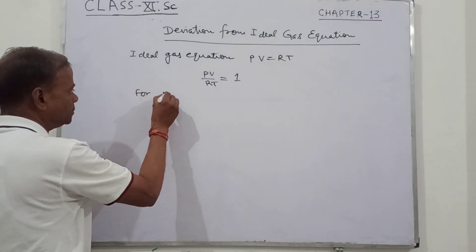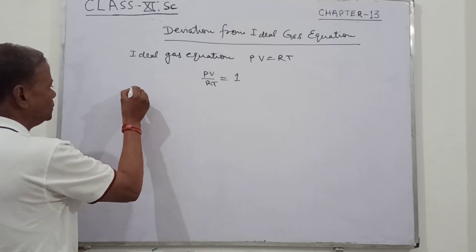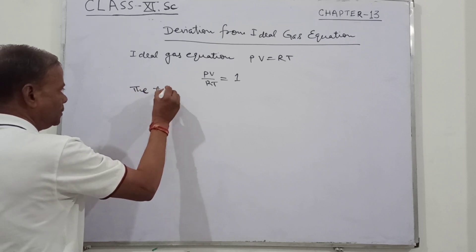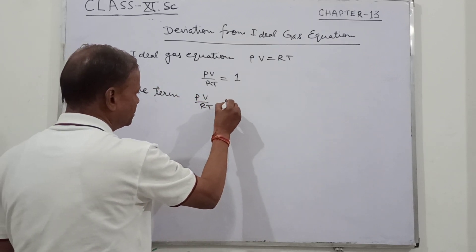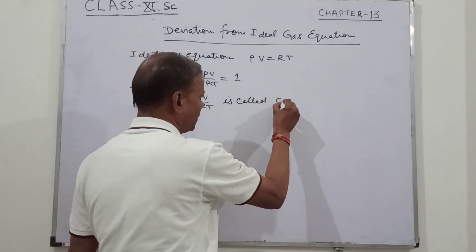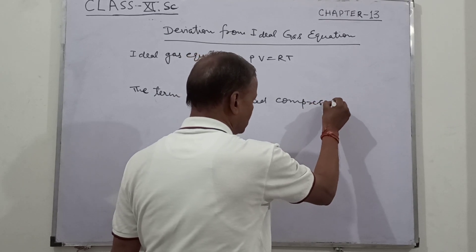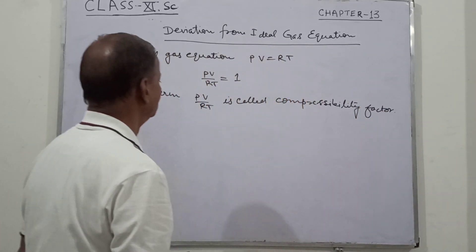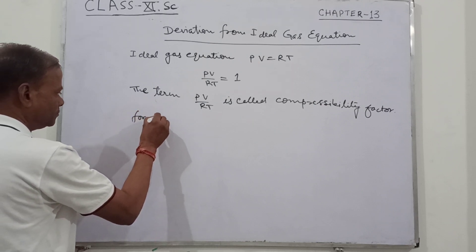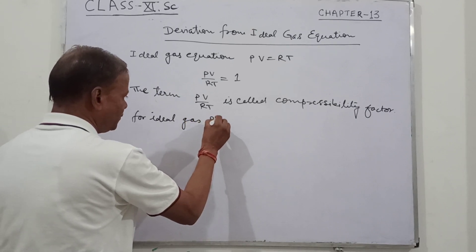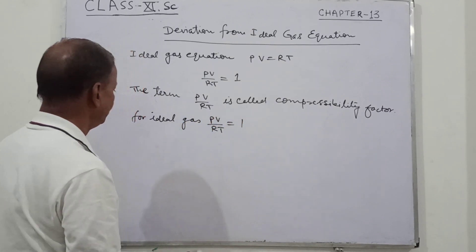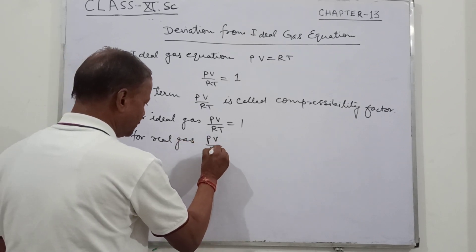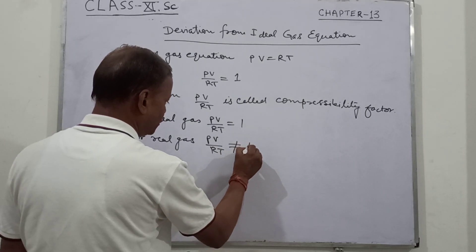The term PV upon RT is called the compressibility factor. For an ideal gas, PV upon RT is equal to 1. And for a real gas, PV upon RT is not equal to 1.